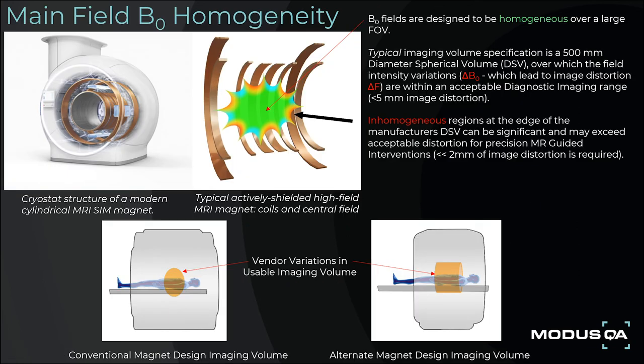All main field magnets for MRI generate strong B0 magnetic fields, designed to be homogeneous or of uniform intensity over a large volume. The typical size of the imaging volume is a 500 mm diameter spherical volume, or DSV, over which the field intensity variations — B0 inhomogeneity — which lead to image distortion, are within an acceptable diagnostic imaging range, typically less than 5 mm of image distortion. Inhomogeneous regions at the edge of the manufacturer's DSV can be significant, and may exceed acceptable distortion for precision MR-guided interventions, where less than 2 mm of image distortion is desired.